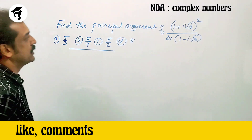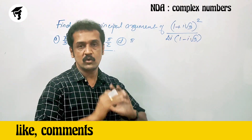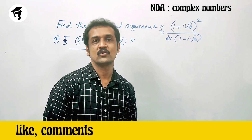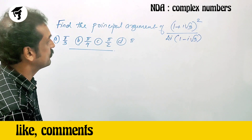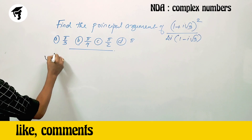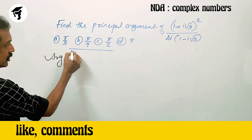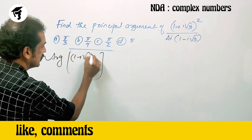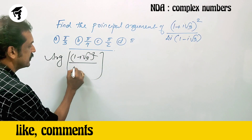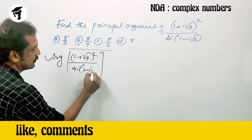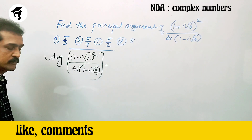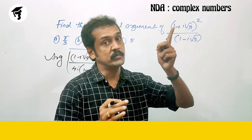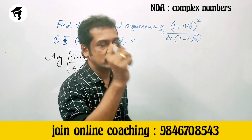Find the principal argument of (1 + i√3)² divided by 4i into (1 - i√3). The argument of a fraction equals the argument of the numerator minus the argument of the denominator.